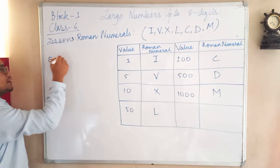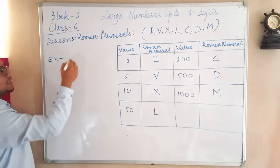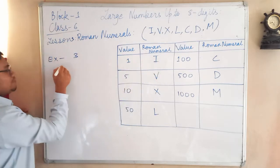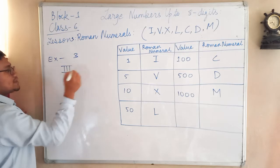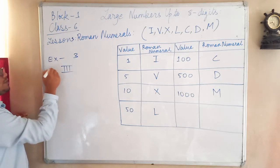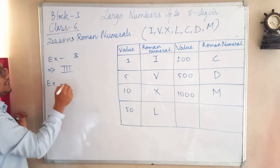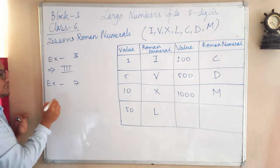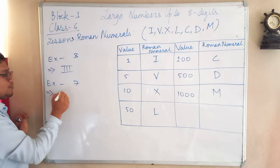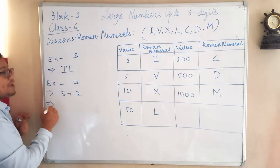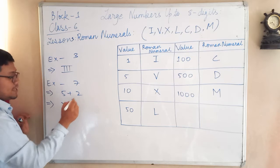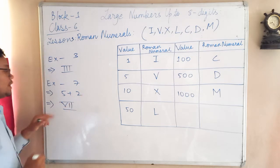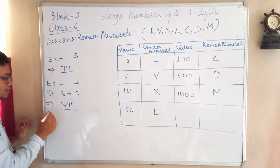Now let me give you some examples. If I say write three in Roman numerals — as you know one is I, so three will be three I's: III. Another example: how will you write seven? Seven is made up of five plus two. Five is V and two is two I's, so seven is written as VII.